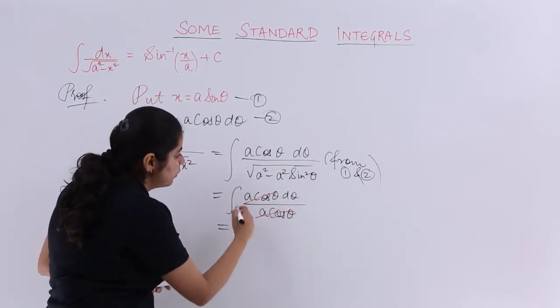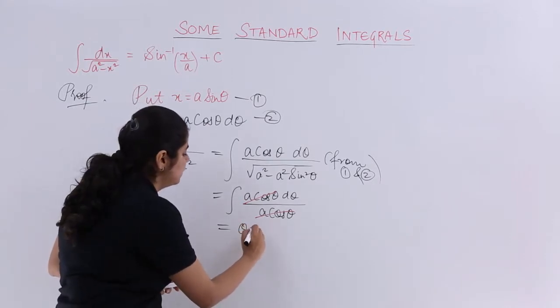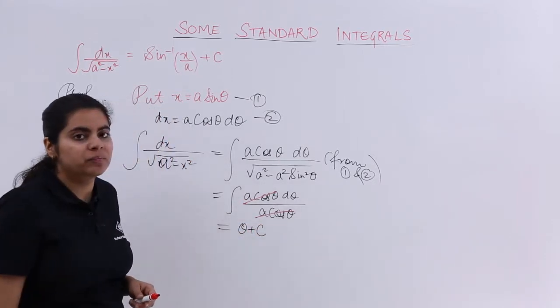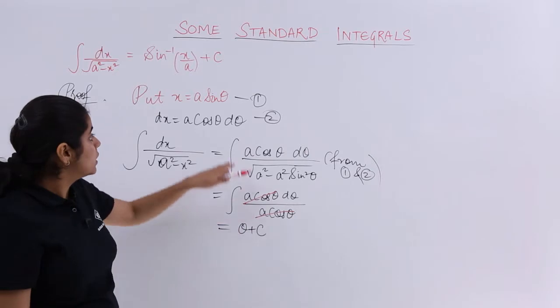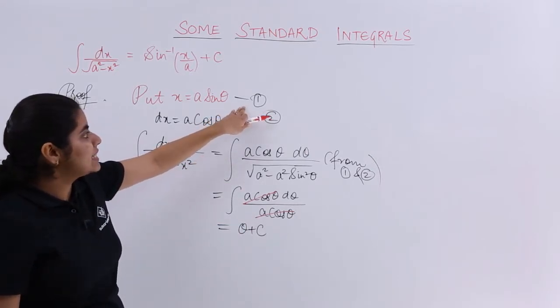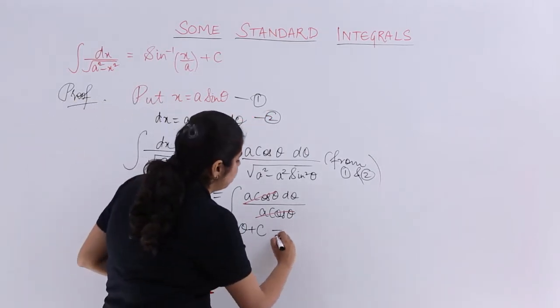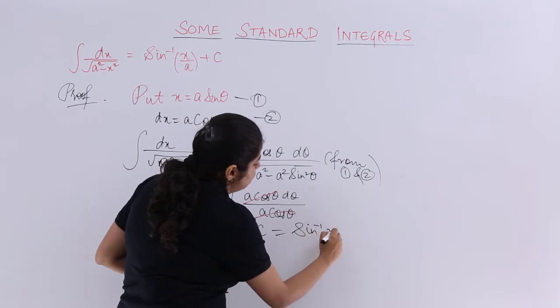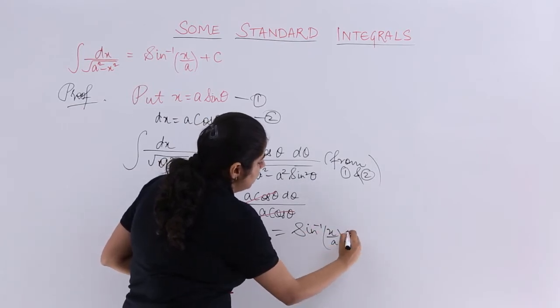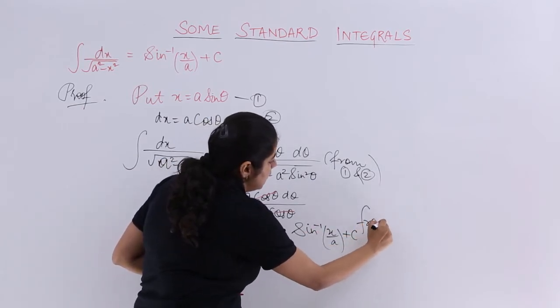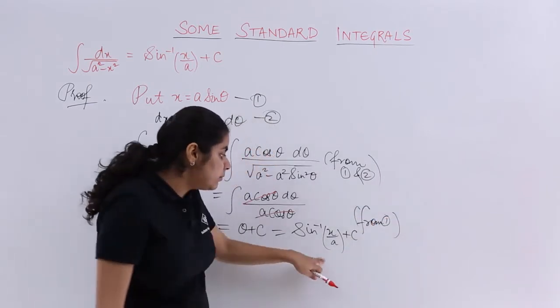Integration of one d theta is nothing but theta plus c. What is theta? Theta from equation number one is nothing but sine inverse x upon a. So it is sine inverse x upon a plus c.